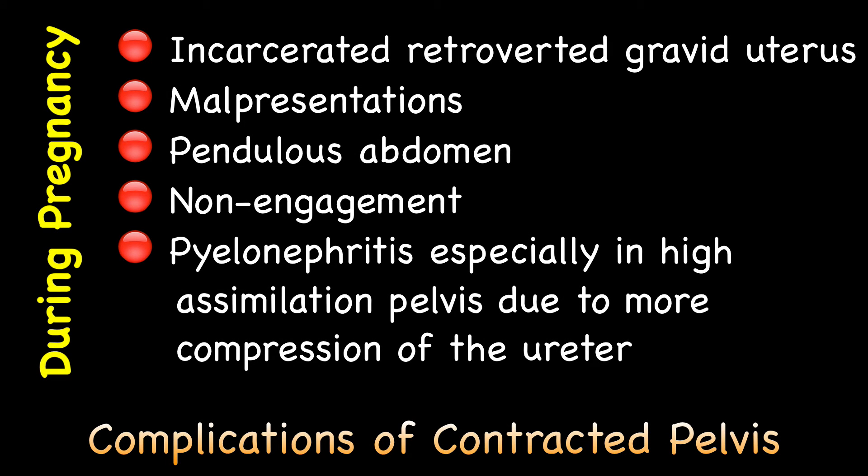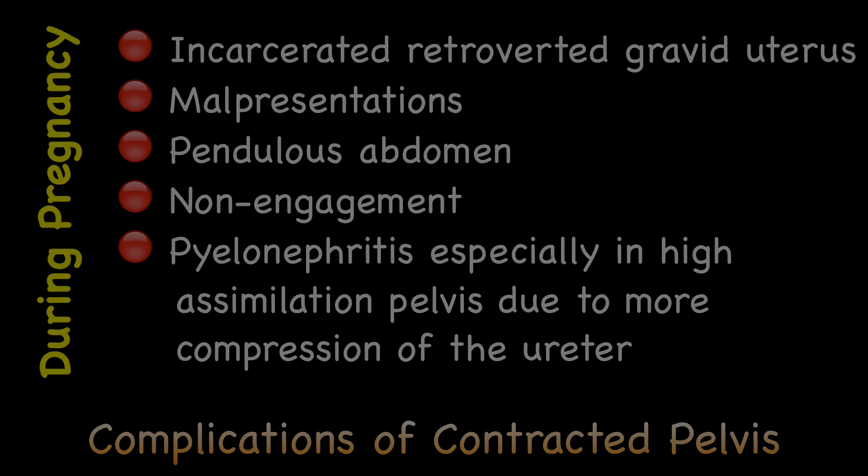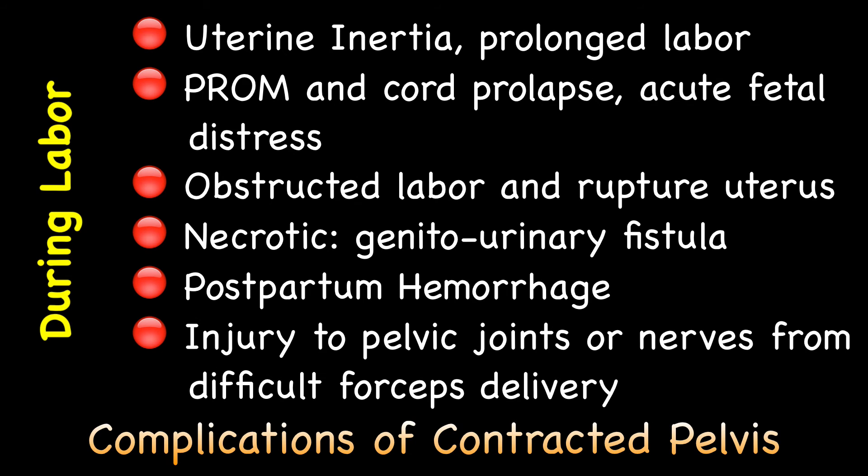I will now enumerate the complications of contracted pelvis. Complications during pregnancy are: incarcerated retroverted gravid uterus, malpresentations, pendulous abdomen, non-engagement of the fetal head, and pyelonephritis, especially in a high assimilation pelvis due to greater compression of the ureter. Complications during labor are: uterine inertia, prolonged labor, premature rupture of membranes, cord prolapse, acute intrapartum fetal distress, obstructed labor, ruptured uterus, necrotic complications such as genitourinary fistula, injury to pelvic joints or nerves from a difficult forceps delivery, and postpartum hemorrhage.